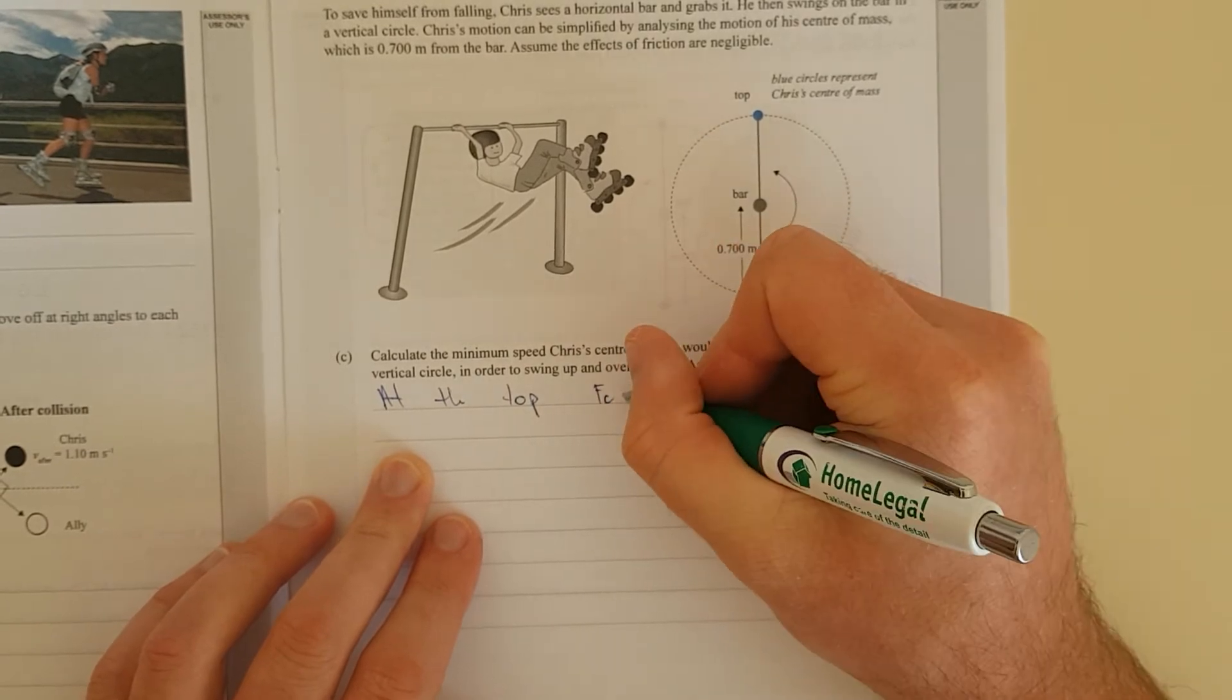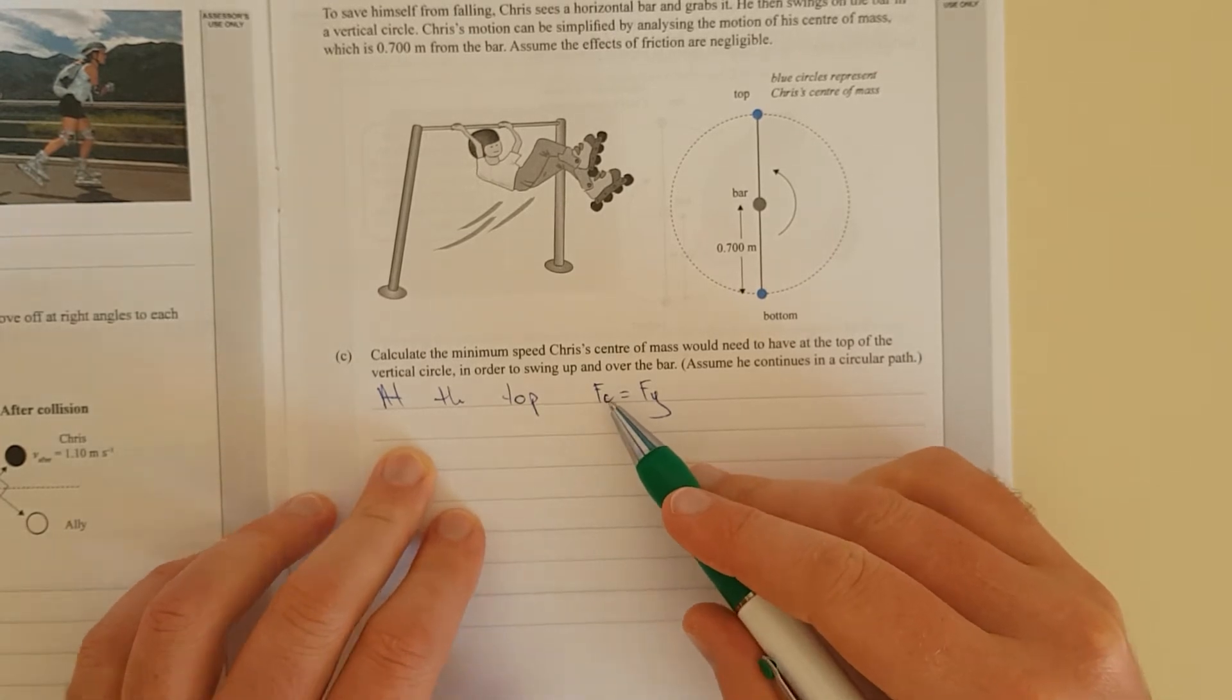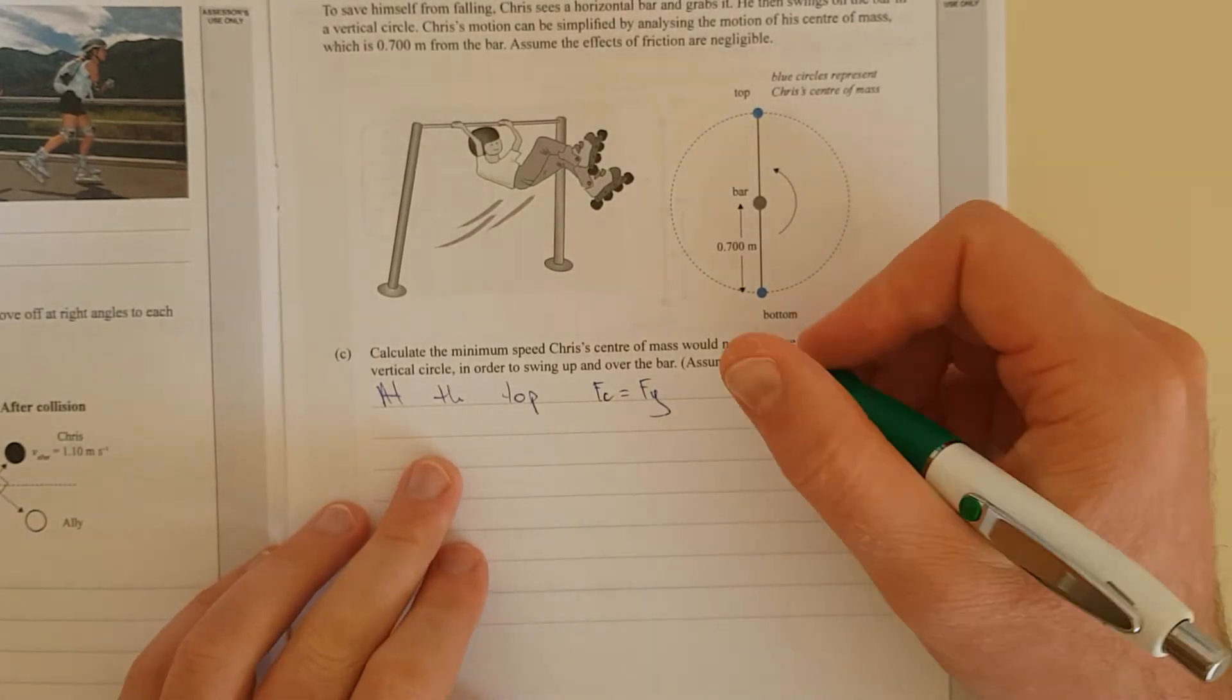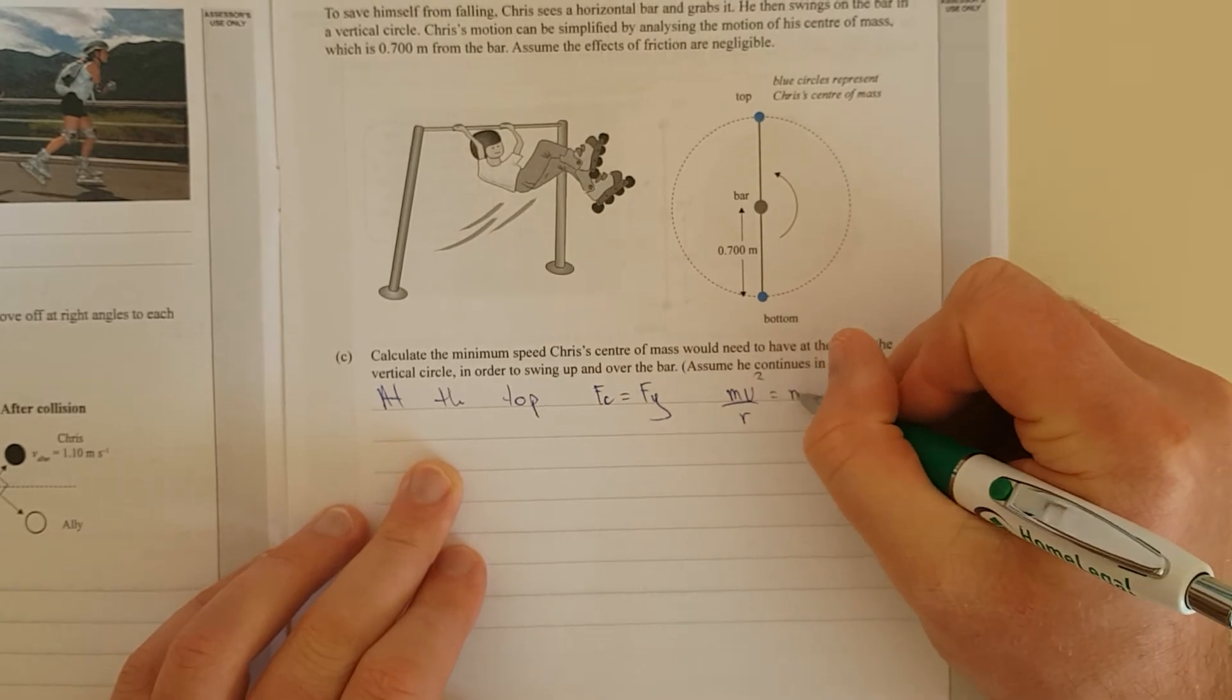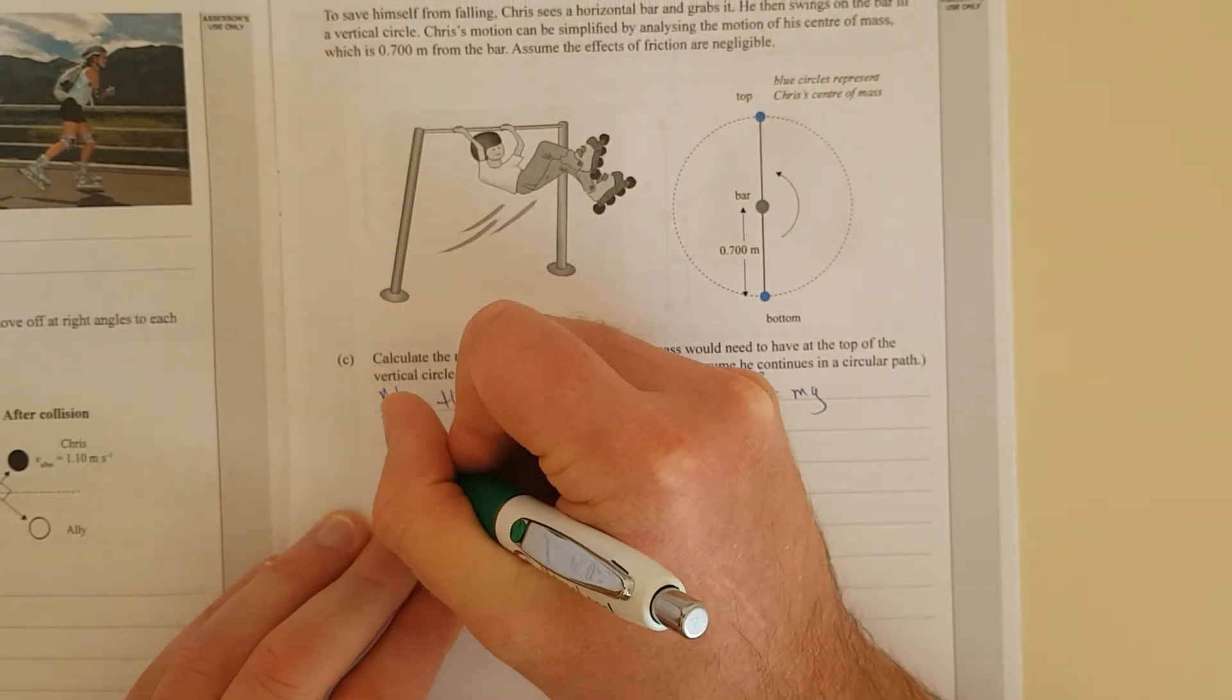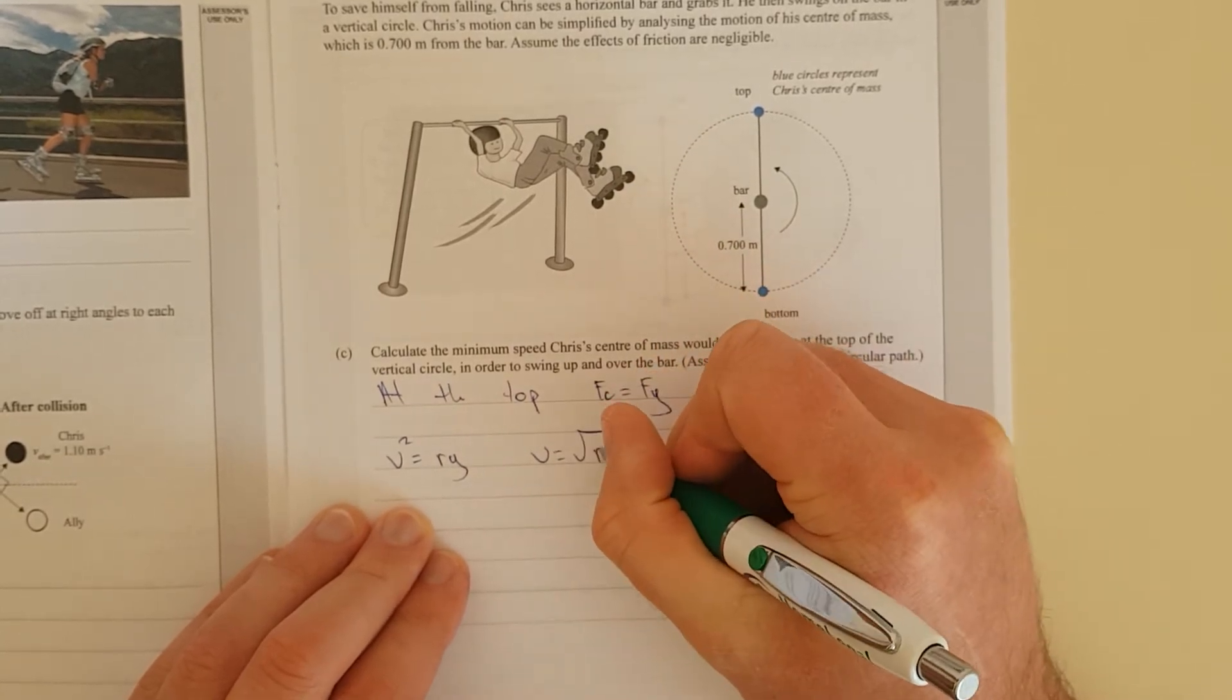At the top, the centripetal force is equal to the gravitational force. So I'll put Fc equals Fg. The centripetal force equals gravitational force in order for it to go in a circle. In other words, mv squared over r equals mg. We can see that the masses cancel out, so we get v squared equals rg. In other words, v equals square root of rg.